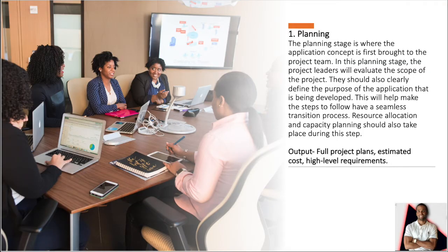The first step is planning. The planning stage is where the application concept is first brought to the project team. The project leaders will evaluate the scope of the project and clearly define the purpose of the application being developed. This will help make the steps to follow have a seamless transition process. Resource allocation and capacity planning should also take place during this step. The output for this step is full project plans, estimated costs, and high-level requirements.